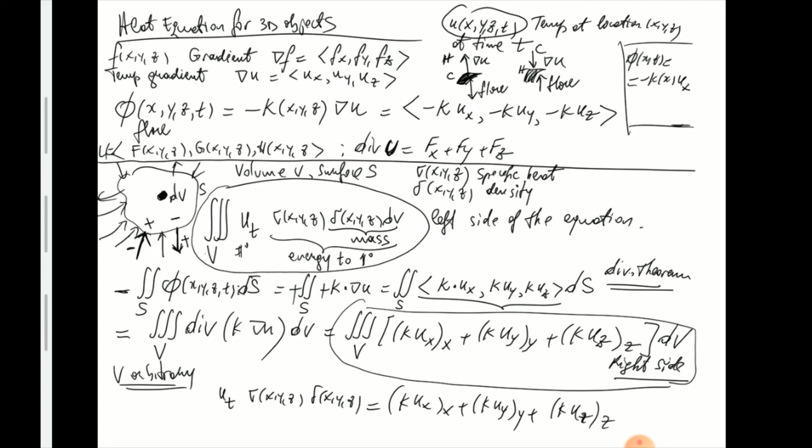At this point you should pause and compare this to the one-dimensional case. In the one-dimensional case it's very similar, except there is only one term: u partial x. And sigma, delta, and k were all functions of x only.